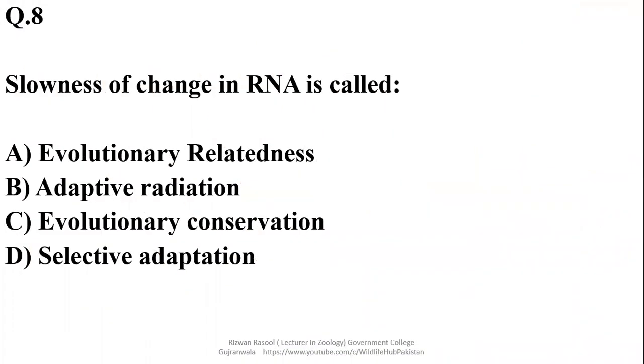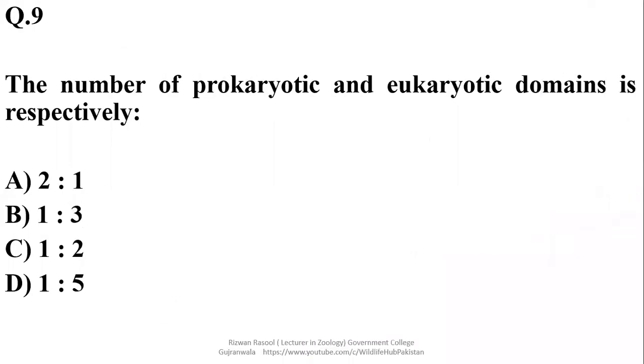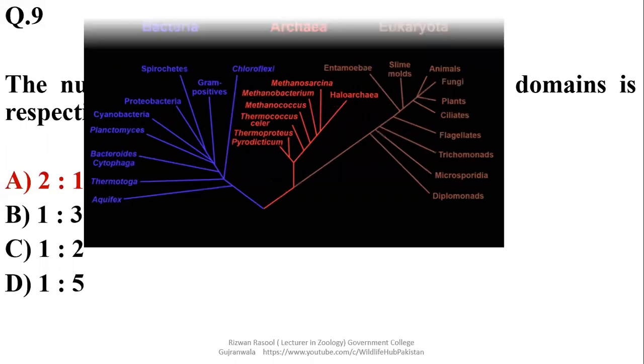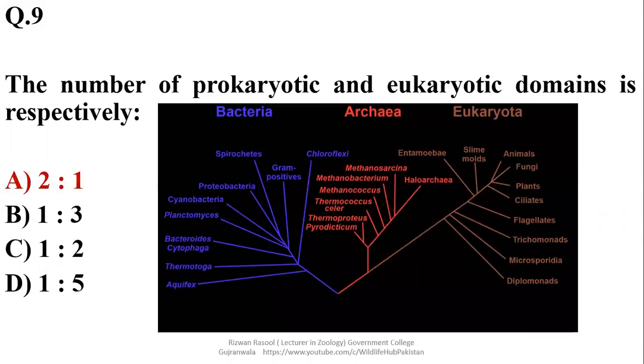Slowness of change in RNA, especially in the ribosomal RNA, is known as evolutionary conservation, so right option is Charlie. The number of prokaryotic and eukaryotic domains is respectively: There are three domains - Archaea, eubacteria and eukarya. So eukaryotes are only having one domain but prokaryotes are having two domains, so right option is alpha.